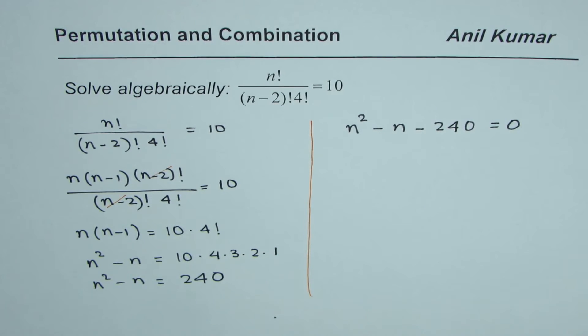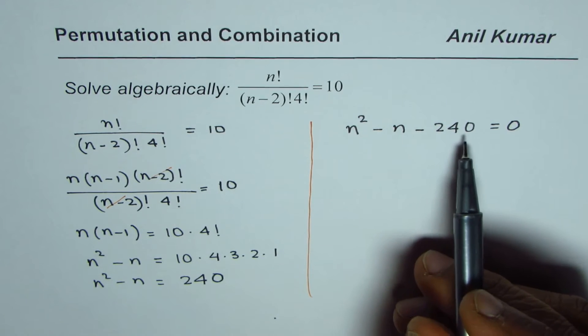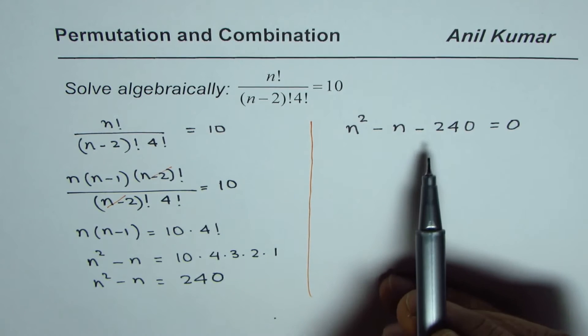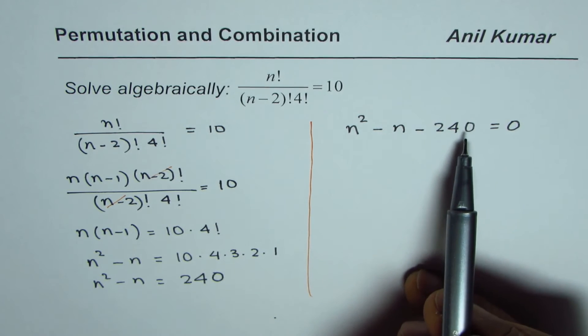You can solve this equation for n using a quadratic formula or even factoring. Let's find two factors since n is an integer, factoring is a good option.